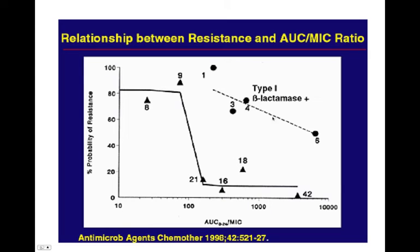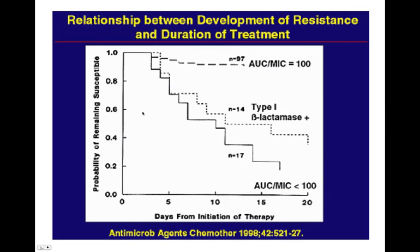If it's a beta-lactamase-producing organism, then this becomes more difficult to do. I have to look up which drug this is — I don't think this is a fluoroquinolone, I think this is a beta-lactam. The longer you're on the drug — the days of duration of therapy — the probability of it remaining susceptible goes from one down to very low when the AUC:MIC ratio is less than 100. If the AUC:MIC ratio is 100, you can see that the bug is very likely to remain susceptible.